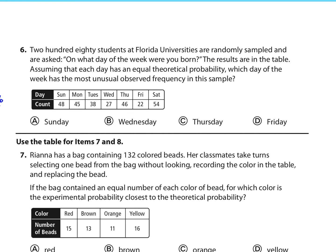Number 6. 280 students at Florida universities are randomly sampled and asked, On what day of the week were you born? The results are in the table. Assuming that each day has an equal theoretical probability, which day of the week has the most unusual observed frequency in the sample? Well, we know there's 280 students, and there are 7 days in the week. So on average, you would expect there would be 40 students each day, but we do know it's going to vary in reality. The one that's furthest to the most unusual would be Friday because it's so far away. The expected amount, 40 minus 22, is 18. It's so far away from what's expected, so that's answer choice D.